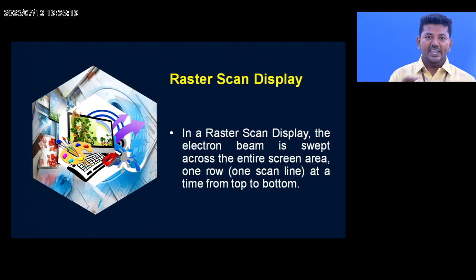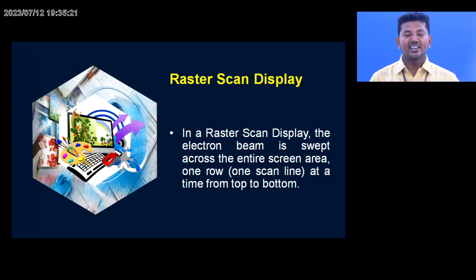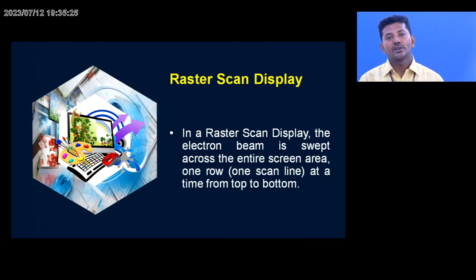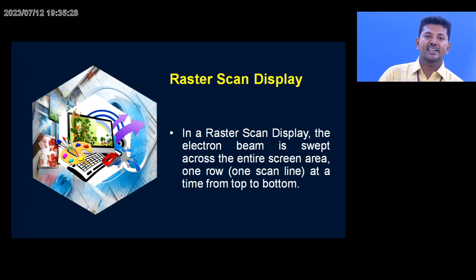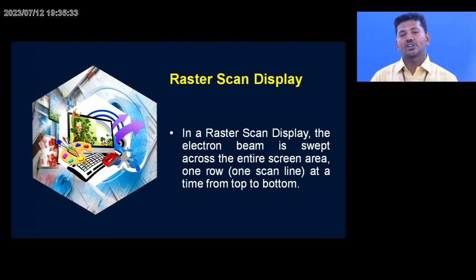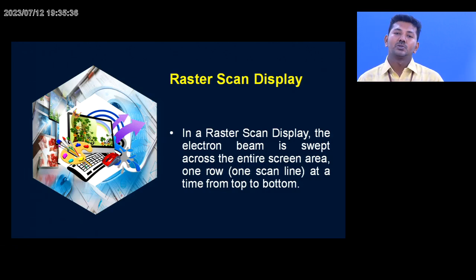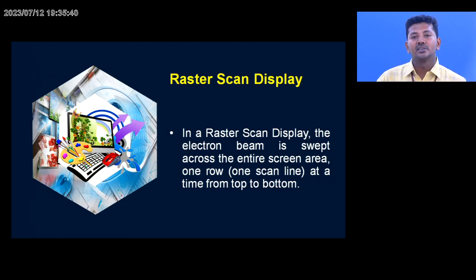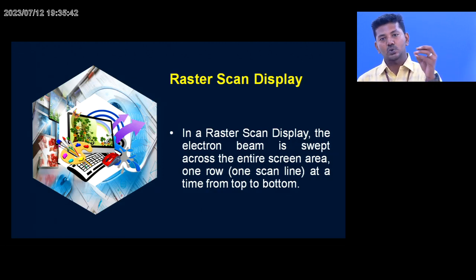Each and every row in a scan has pixels — we call it a scan line. In a scan line, the first pixel is noted as the left top and the last pixel is noted as the right bottom. These are the pixels scanned by the electron beams, and the electron beams are passed through the electron guns.